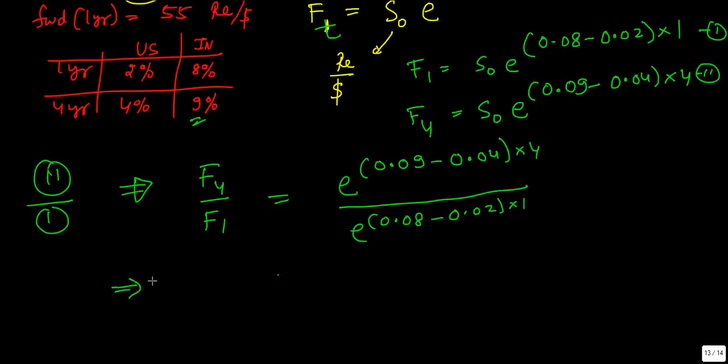If you simplify this, F4 will become F1 into e to the power, let us simplify, this will be 0.36, 9 into 4, 36 minus 4 into 4, it will be 0.016. And if I bring this above, this will become minus 0.08 and this will become plus 0.02.